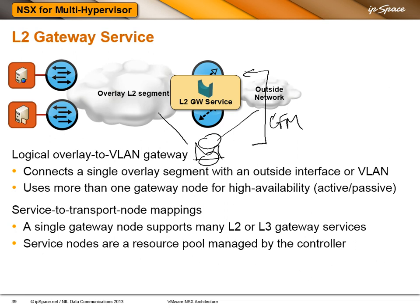The other thing the gateway nodes do is listen to spanning tree updates. They are not participating in spanning tree, but they're listening to it. If there is a change in spanning tree topology, then like every decent bridge they go into listening mode, and in the listening phase they check CFM updates from other gateway nodes so that after they start forwarding they don't cause a forwarding loop.